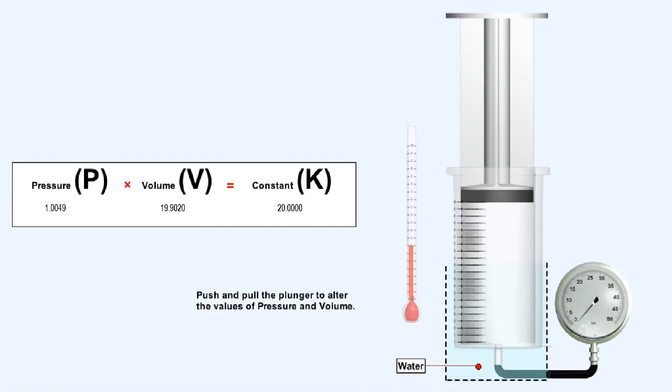Try moving the plunger up and down yourself to simulate changing the weight on it, and note that the results of P times V always remain a constant.